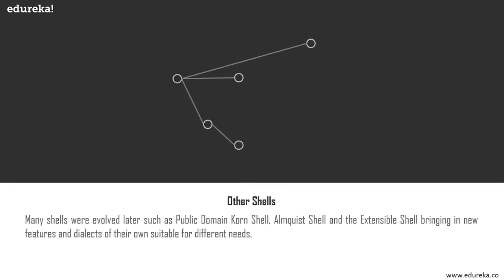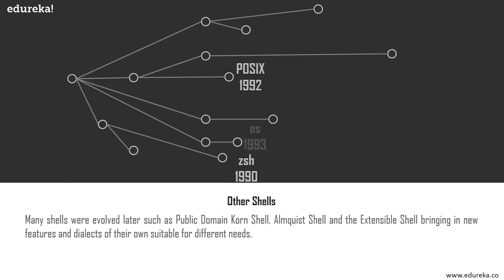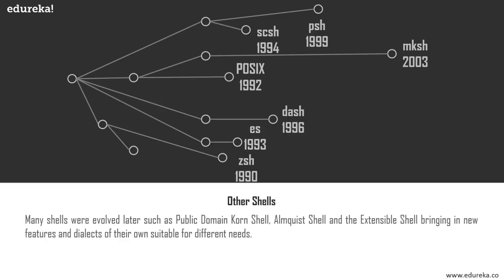After bash, the world saw various other shells such as the Public Domain Korn Shell (a free version of the Korn shell), the Almquist shell, and the extensible shell or Plan 9 shell. Today we have many others, including the Z shell, the Debian Almquist shell (dash), and the MirBSD Korn shell. In this segment, I'm going to focus on four shells: the Bourne shell, the Bourne Again shell, the Korn shell, the TCSH, and an exotic shell called the Scheme shell.